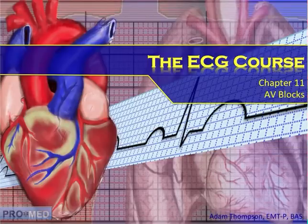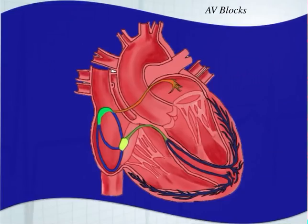Hello and welcome back to the ECG course. This is chapter 11 on AV blocks — atrioventricular blocks. The first thing to mention is that AV blocks themselves are not a type of rhythm or arrhythmia; they are simply an interruption in the conduction.